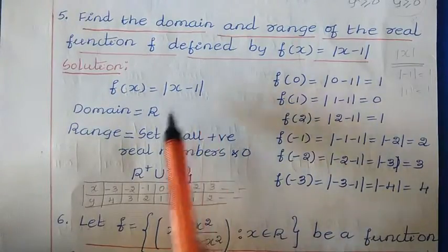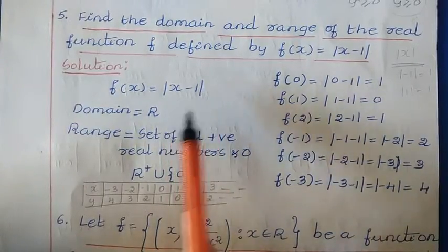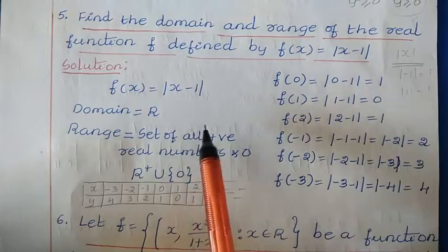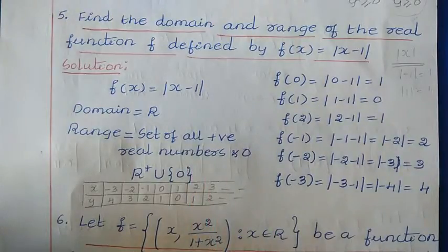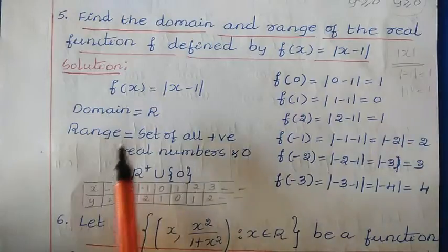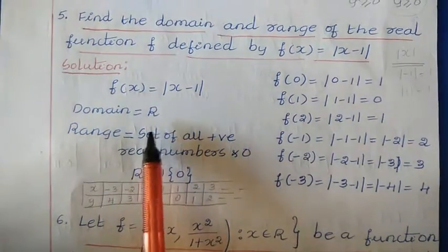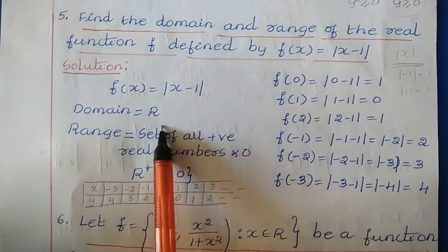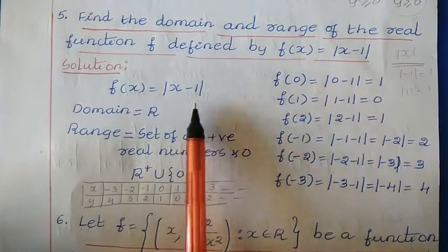We can give all kinds of values here — positive integers, negative numbers, 0 — any value we can give. That means the domain is the set of real numbers.